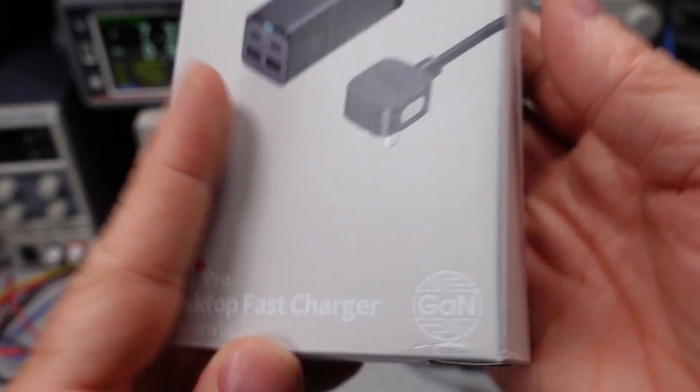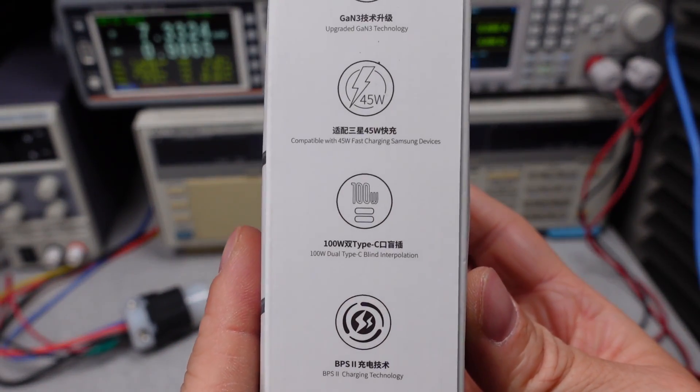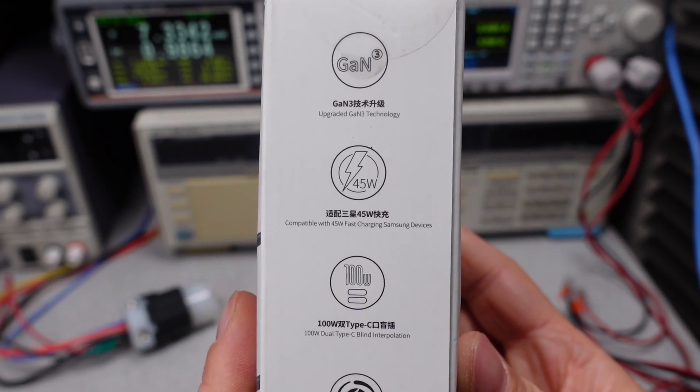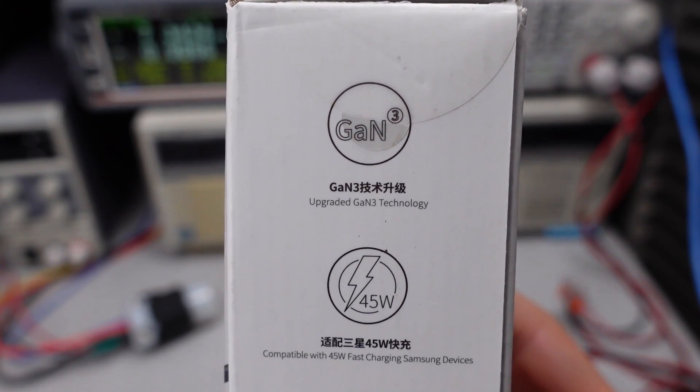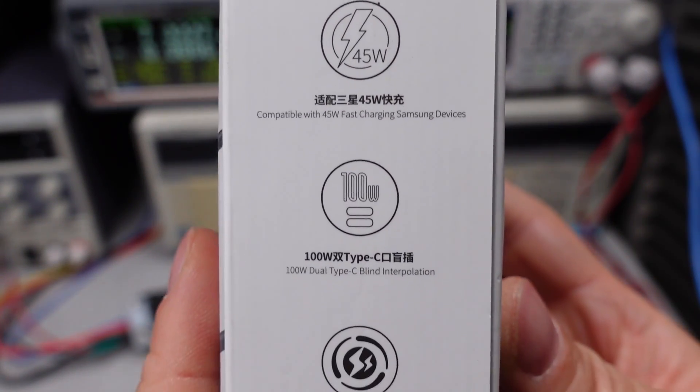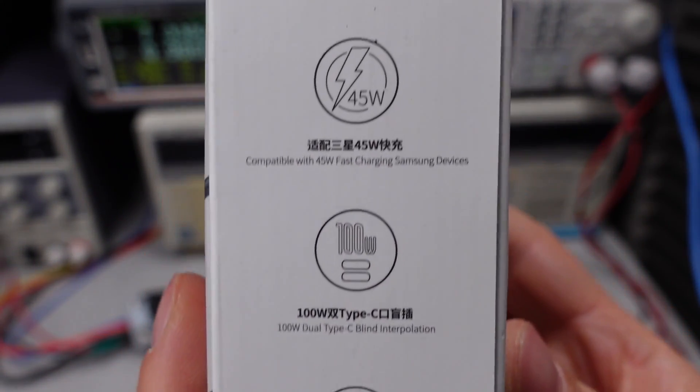On this one, we see GAN3 or Cubed or whatever that means. This is a desktop style power adapter as opposed to the wall wart style. So we will have to see what's been done different on this updated adapter.